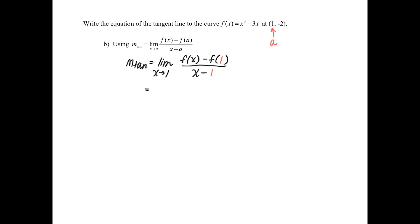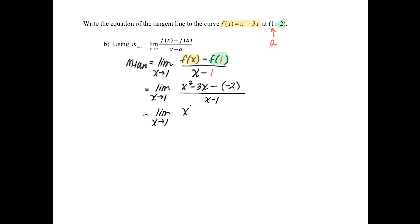We cannot do direct substitution because we'll get division by 0. So we need a little algebra. f(x) is just the function we were given: x³ - 3x. Then we subtract f(1), which is the y value when x = 1, already known to be negative 2. So we subtract negative 2 and divide by (x - 1). This gives us the limit as x→1 of (x³ - 3x + 2) / (x - 1).